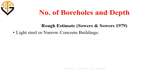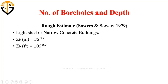For a rough estimate using Sower's equation, for a light steel or narrow concrete building you can use this equation to predict the depth of the borehole. Here, Z is the depth, B stands for borehole, and the formula is Z = 10 × S^0.7, where S is the number of stories. For example, if the number of stories is two, you put the value of two into the equation.